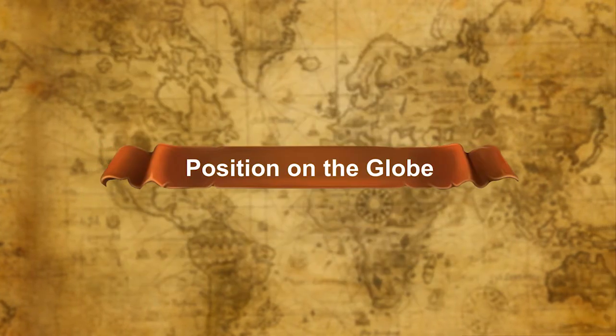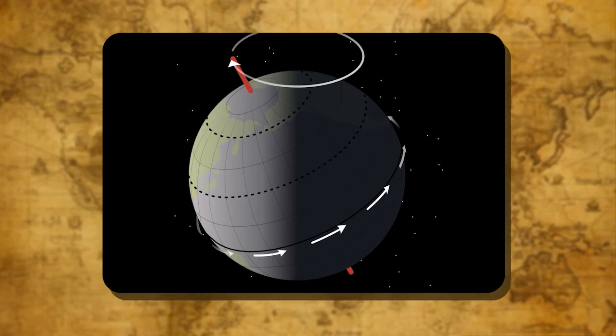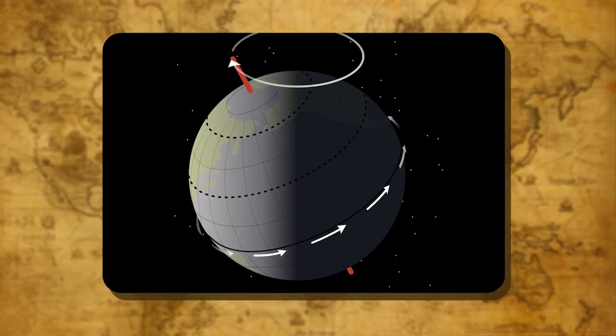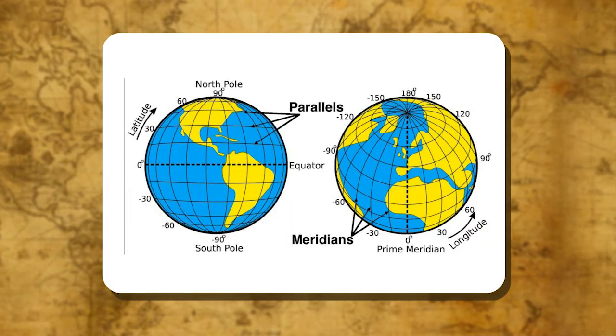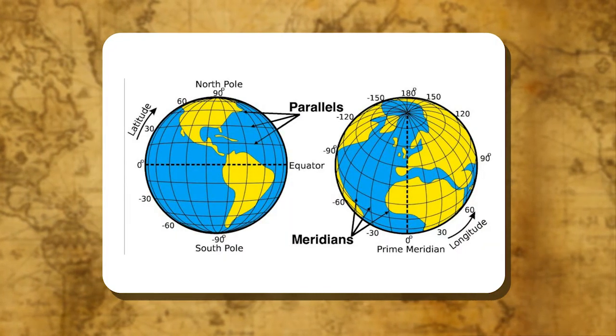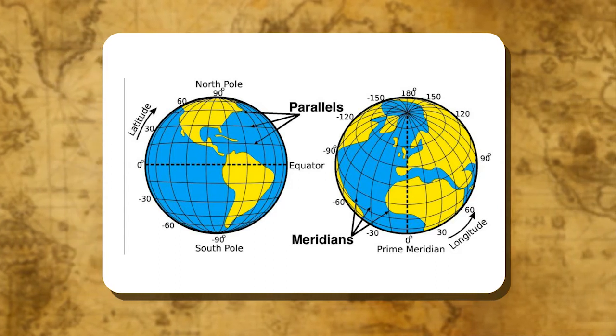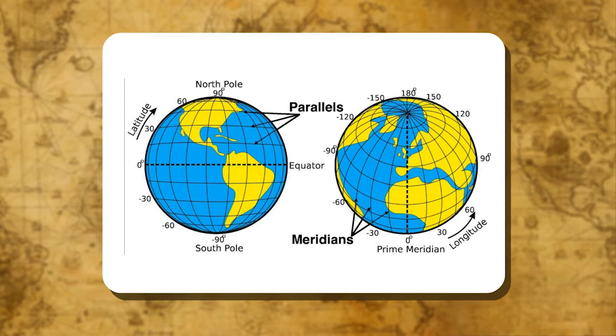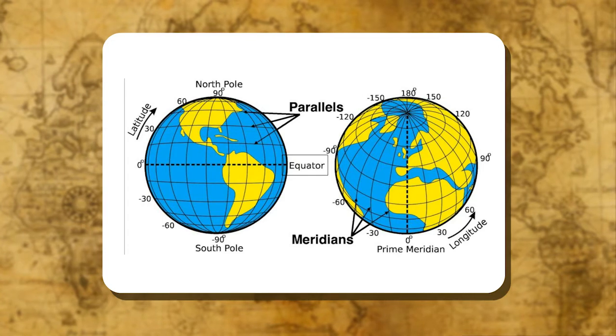The rotation of the earth establishes two fixed points on the earth known as the north pole and south pole. These are the points where imaginary axis of the earth ends in the north and in the south. Between the north and the south pole, an imaginary circle known as the equator divides the earth into two equal halves, the northern hemisphere and the southern hemisphere.